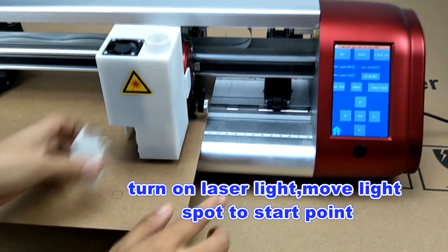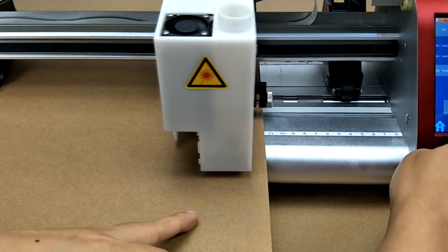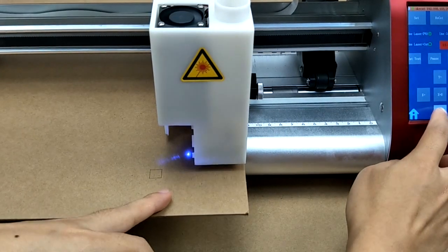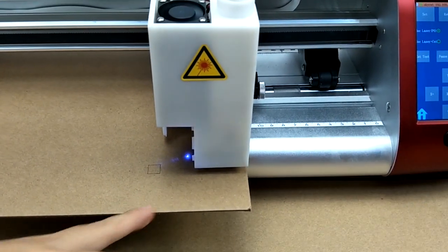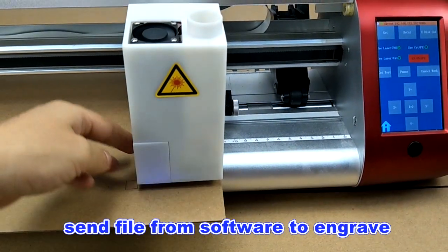Then we turn on the laser light to move to the start point. Next, let's set data from software to start engraving.